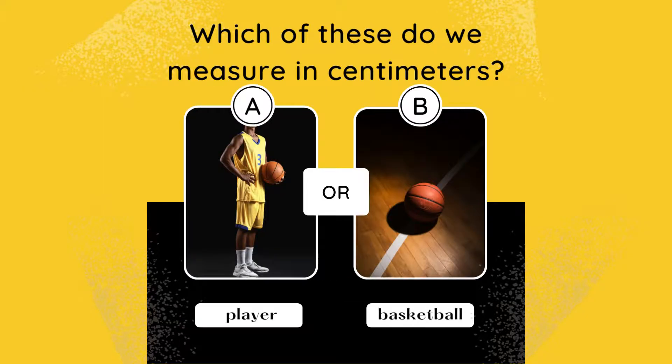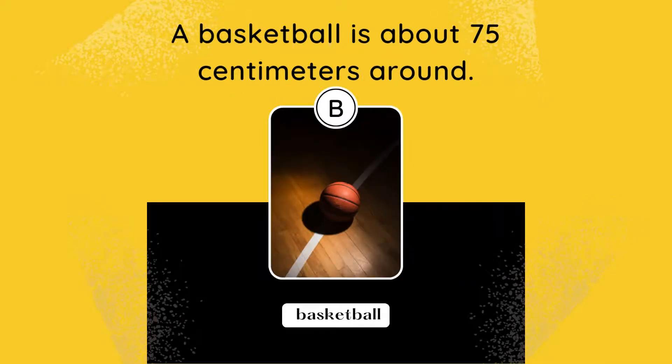Which of these do we measure in centimeters: A, a basketball player, or B, a basketball? The answer is B. A basketball is about 75 centimeters around.